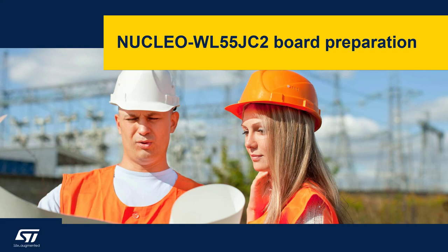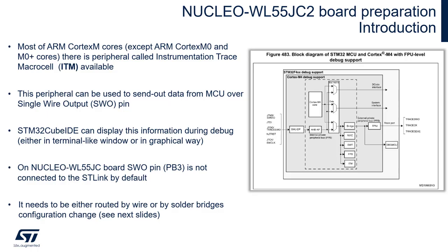Nuclear WL55 JC2 board preparation. Within this exercise we will use a single wire viewer option. Most ARM Cortex-M cores, except Cortex-M0 and M0+, have a dedicated peripheral called Instrumentation Trace Macro Cell (ITM). This peripheral can be used to send some data from the MCU — it can be anything addressable, such as a global variable.